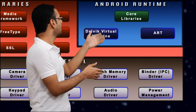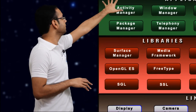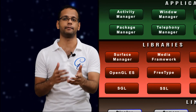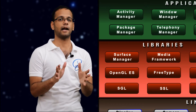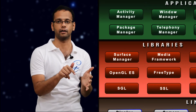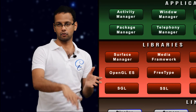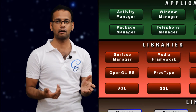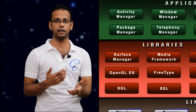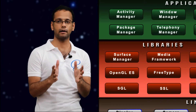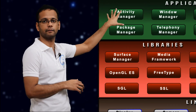Moving up, we have the activity manager and all other managers written in Java. The activity manager manages the activity — meaning whatever the user directly interacts with on screen. Whether the user presses the home button, the back button, the activity goes to background or comes to foreground, or another activity comes into foreground such as an incoming call — all the behavior of the activity is managed by the activity manager. It manages the multitasking of activities.